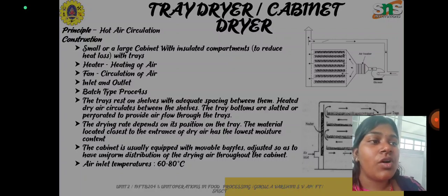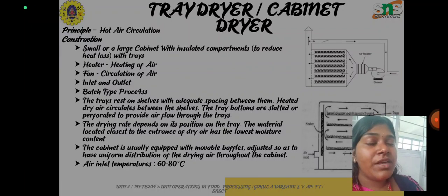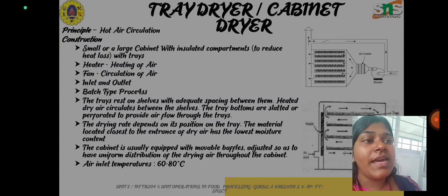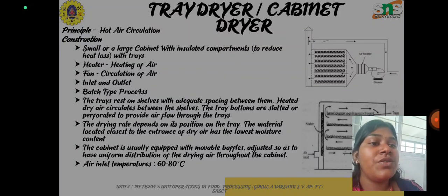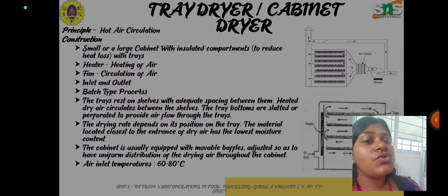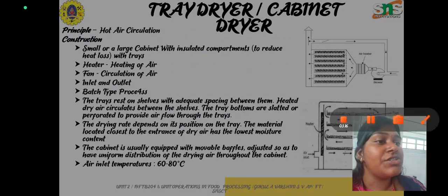The tray bottoms are slatted or perforated to provide airflow through the trays. The drying rate depends on the position of the trays — material closest to the entrance of the dryer air has the lowest moisture content, and material at the bottom tray dries quickest as there is more heat supply there. The cabinet is equipped with movable baffles adjusted for uniform distribution of drying air, and the inlet air temperature is around 60 to 80 degrees Celsius.